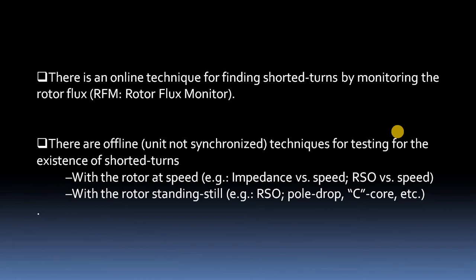The offline technique means we are not synchronizing the unit to the grid — not generating any active or reactive power. Offline techniques for testing the existence of shorted turns, with the rotor at rated speed, include plotting a graph of impedance versus speed or RSO versus speed. When the rotor is at standstill, we can identify shorted turns using the pole drop test or the RSO/C-code test.